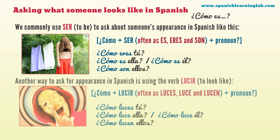Another way to ask for appearance in Spanish is using the verb lucir, meaning 'to look like,' following this structure: cómo plus lucir, often conjugated as luces, luce, and lucen, plus a pronoun. As in these questions: ¿Cómo luces tú? ¿Cómo luce ella? ¿Cómo luce él? ¿Cómo lucen ellos?